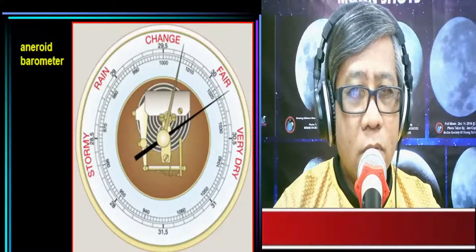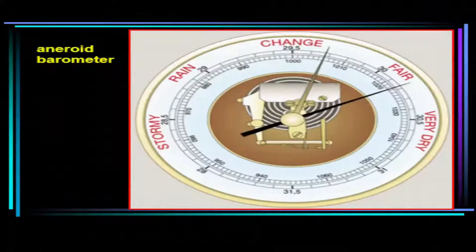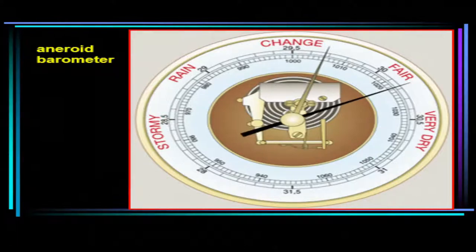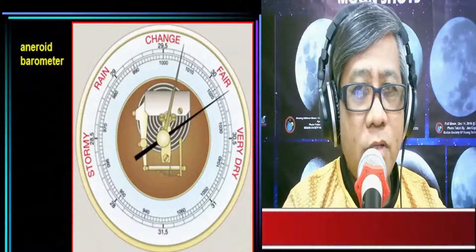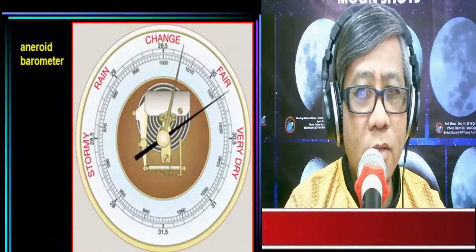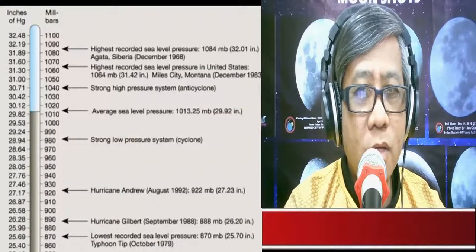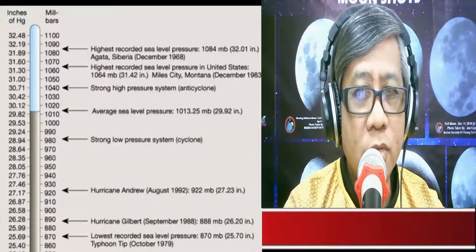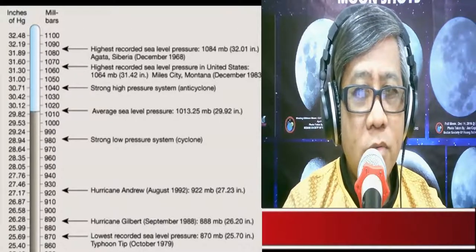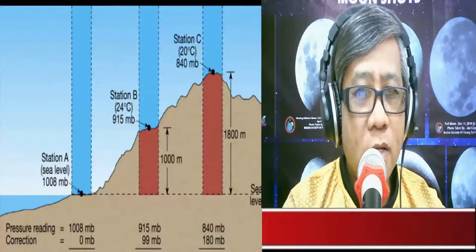The aneroid barometer contains an evacuated metal chamber that changes shape with changing air pressure. As the chamber changes shape, this is translated into mechanical movement that moves dials and pointers to indicate the changing air pressure. The barometer, whether mercurial or aneroid, plays an important role in weather forecasting.